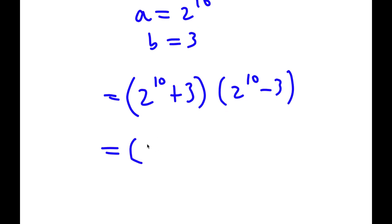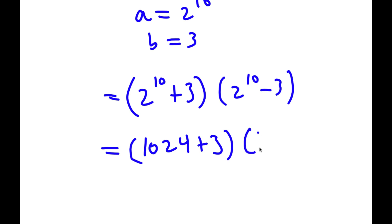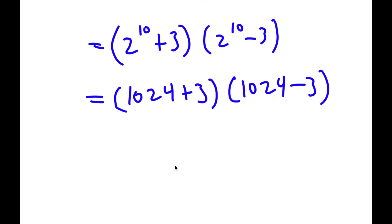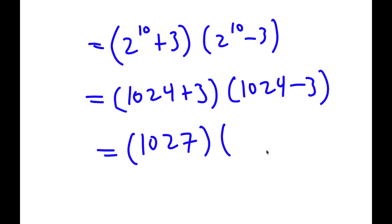2 to the power of 10 is simply equal to 1,024. So now I have 1,024 plus 3 times 1,024 minus 3. 1,024 plus 3 is 1,027, so I have 1,027 times 1,024 minus 3, which is 1,021.